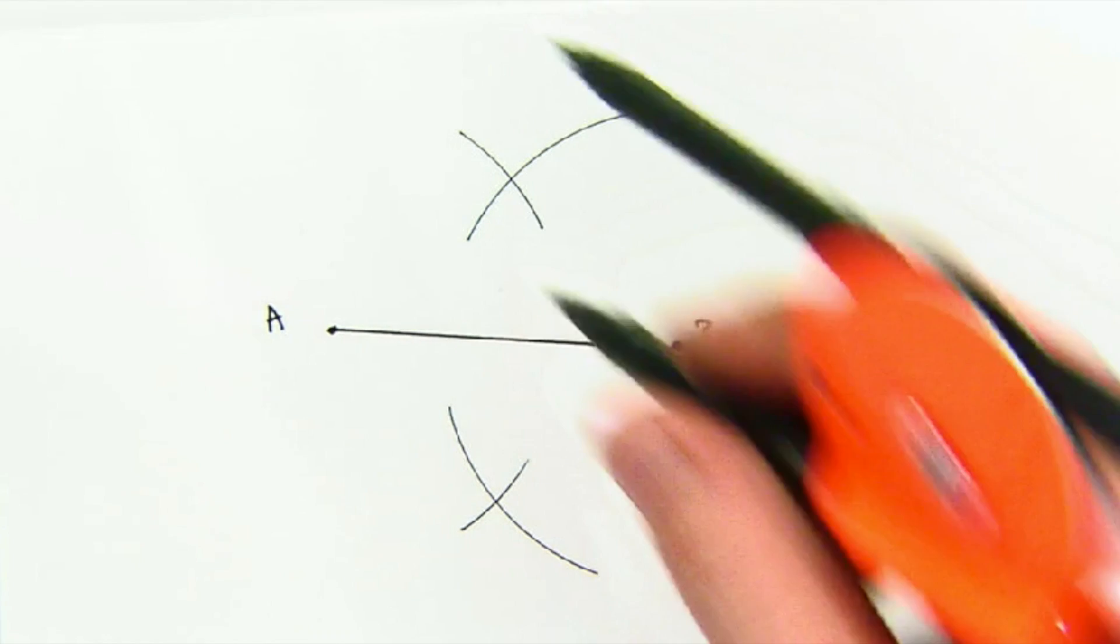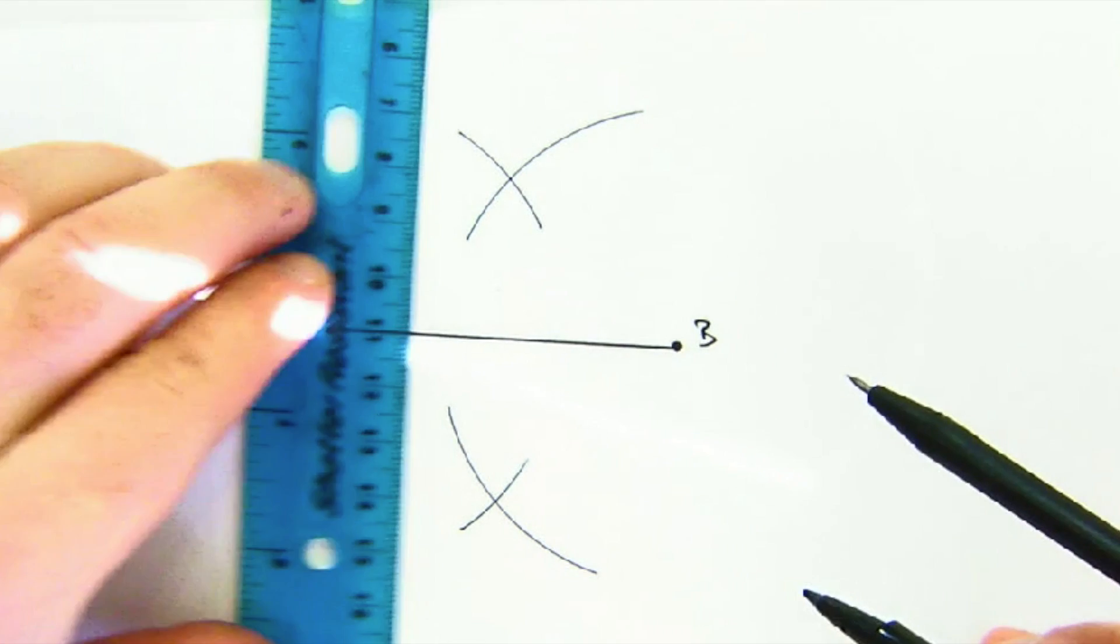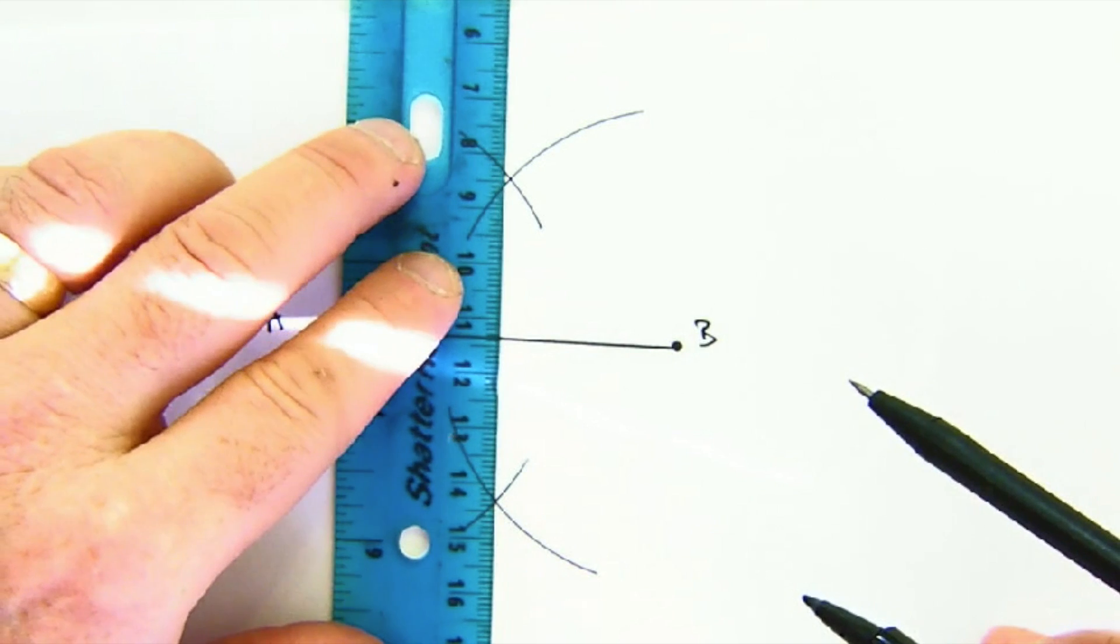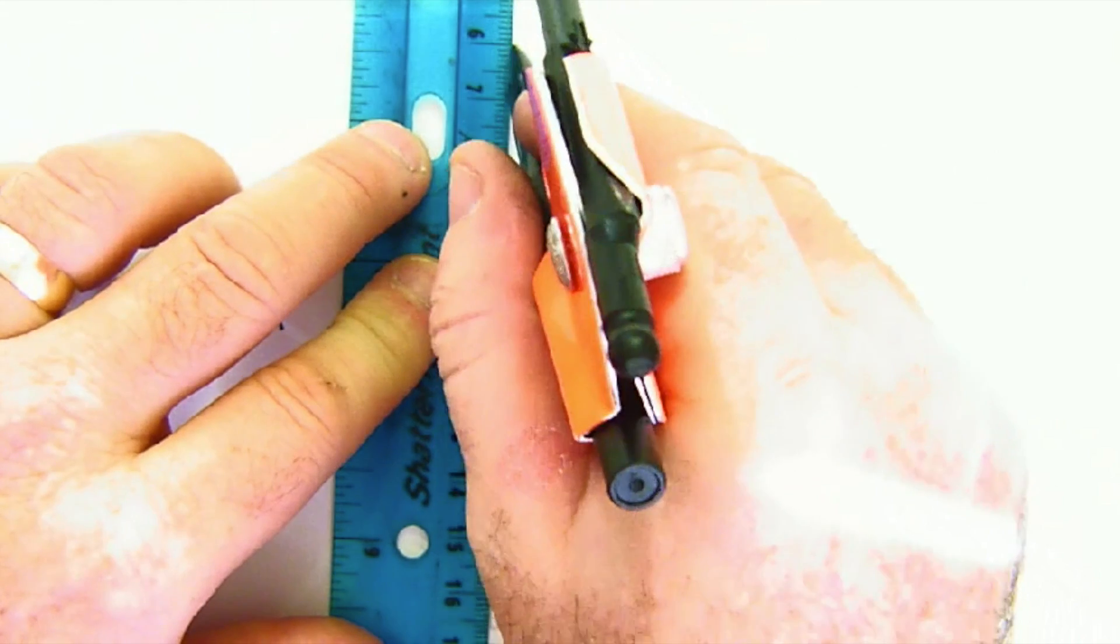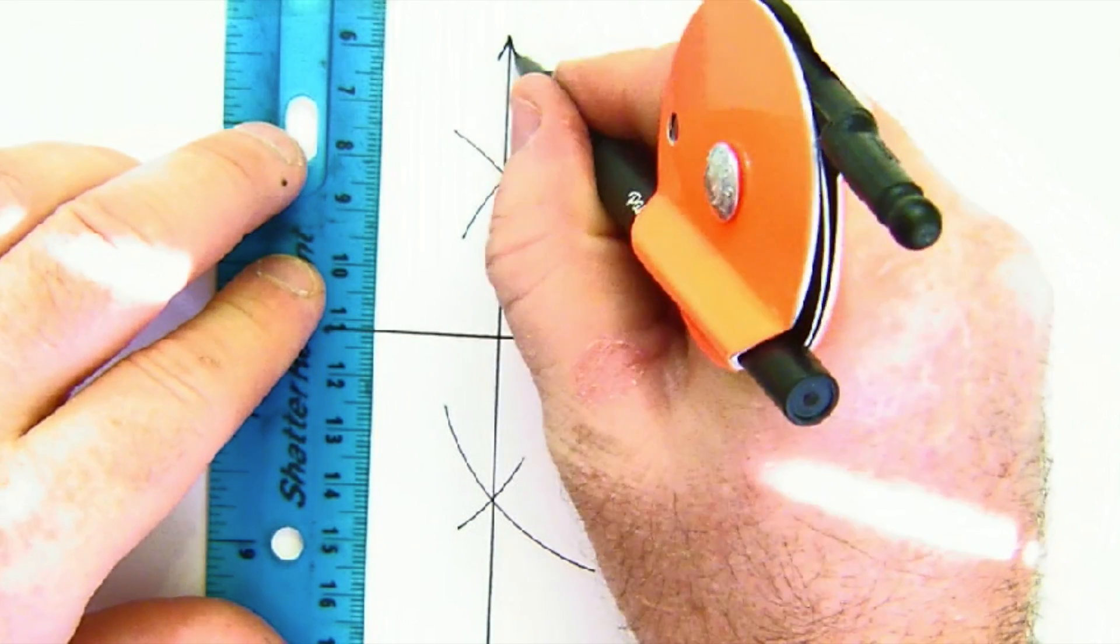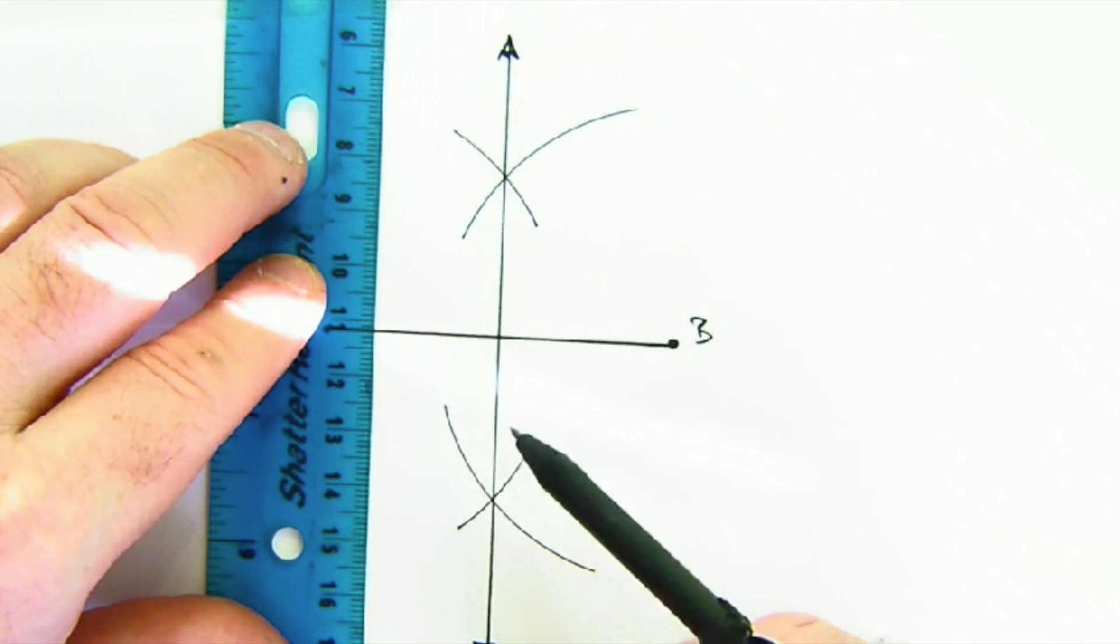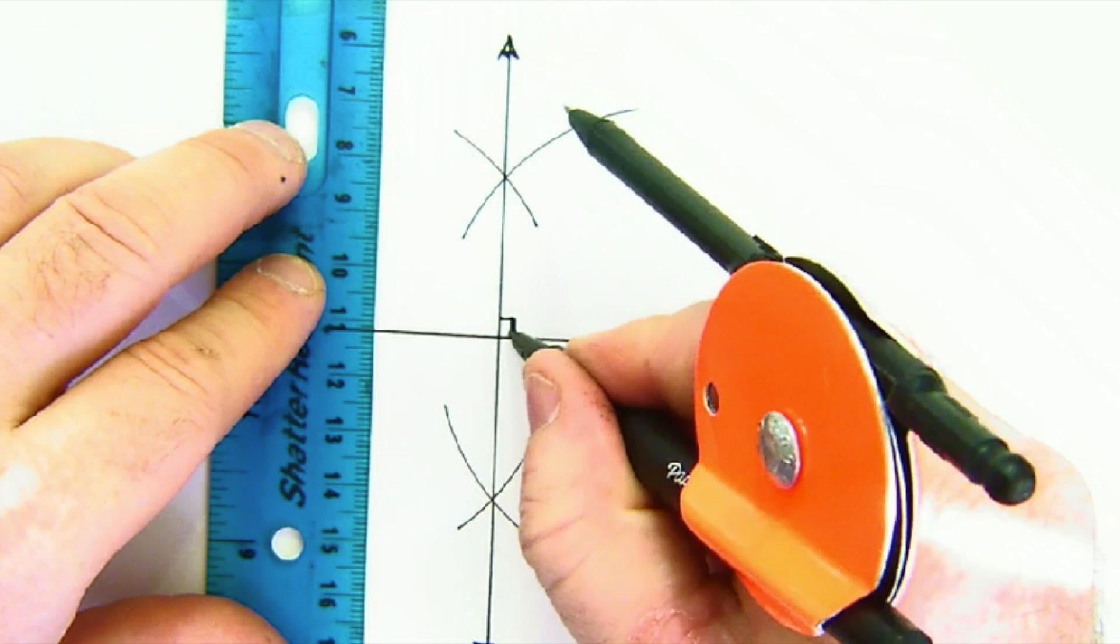This creates two intersection points that if we take our straight edge and connect those two, we get exactly what we wanted, which is a perpendicular line that bisects.